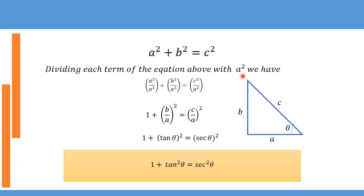For the second identity, we divide each term of a² + b² = c² by a². This gives 1 + (b/a)² = (c/a)². Now b/a is opposite over adjacent, which is tangent. And c/a is hypotenuse over adjacent, which is the reciprocal of cosine — that is sec. So we get 1 + tan²θ = sec²θ.